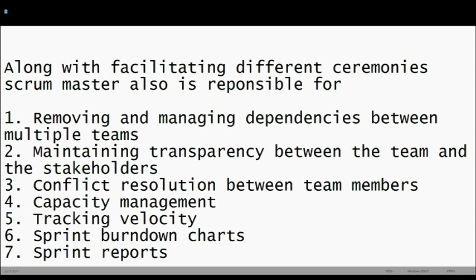A Scrum Master is also responsible for capacity management — tracking the team's capacity, who is working how many hours. You can create an Excel sheet before sprint planning where team members fill in the hours they are working each week. That way you track capacity and how many hours equate to story points when work is assigned.